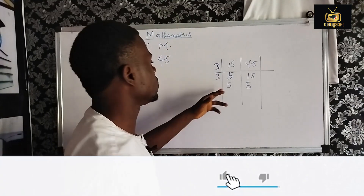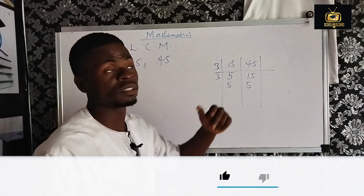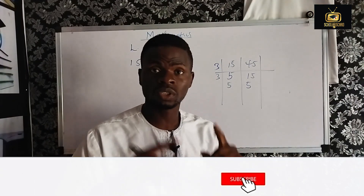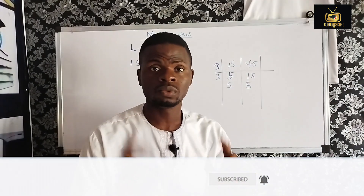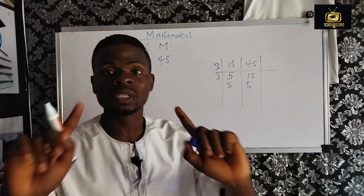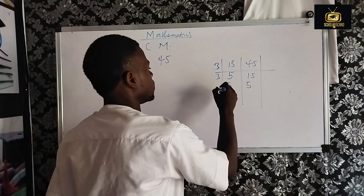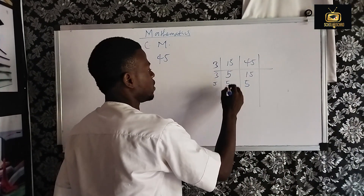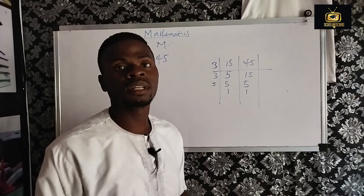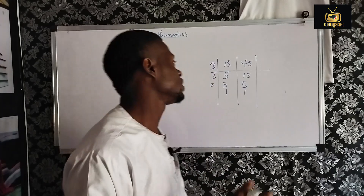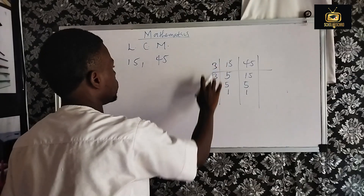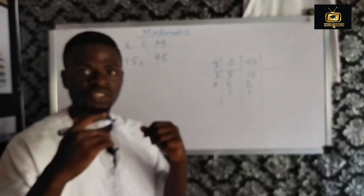Now if you look at these numbers — 5 and 5 — 3 cannot divide them perfectly because 3 into 5 gives remainder 2. So the next prime number is 5. Check: 5 into 5 gives 1, write 1; 5 into 5 gives 1, write 1. Now it is time to multiply the prime numbers we used.